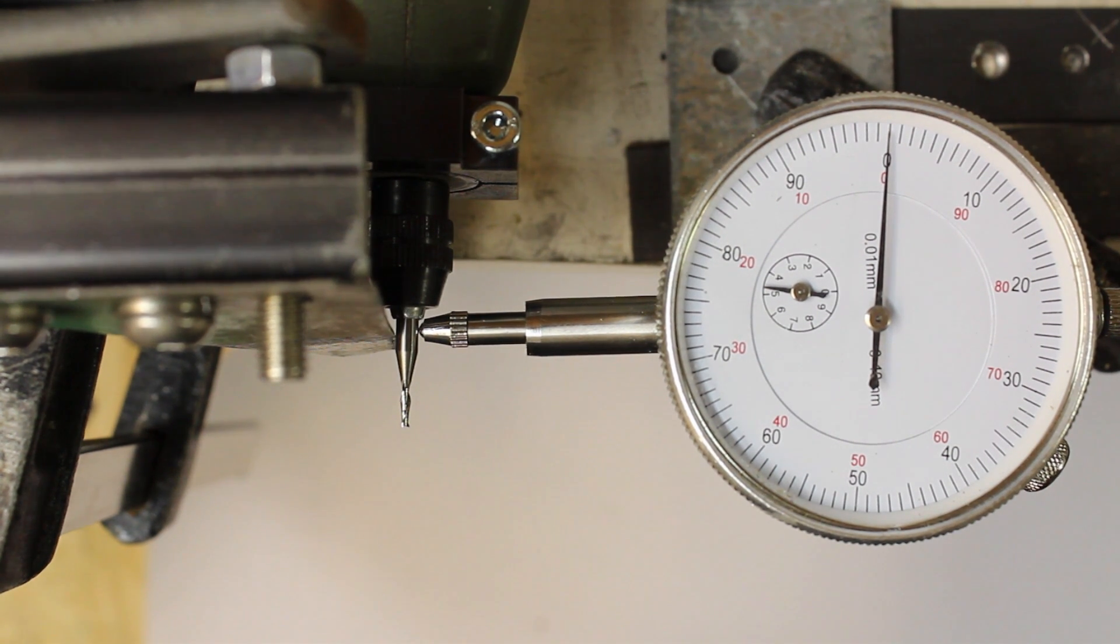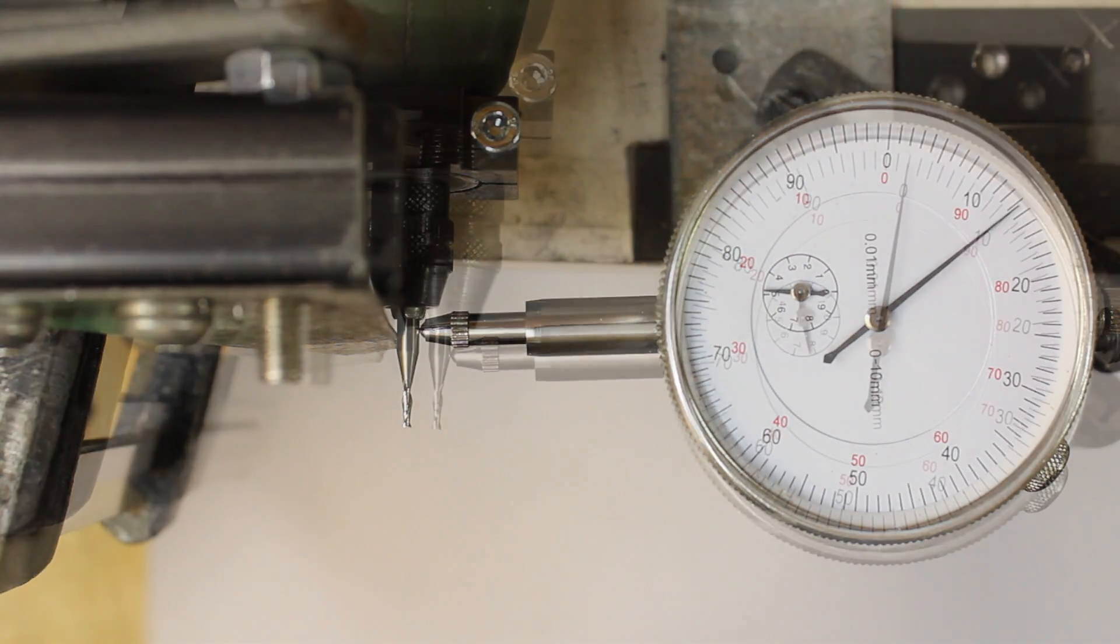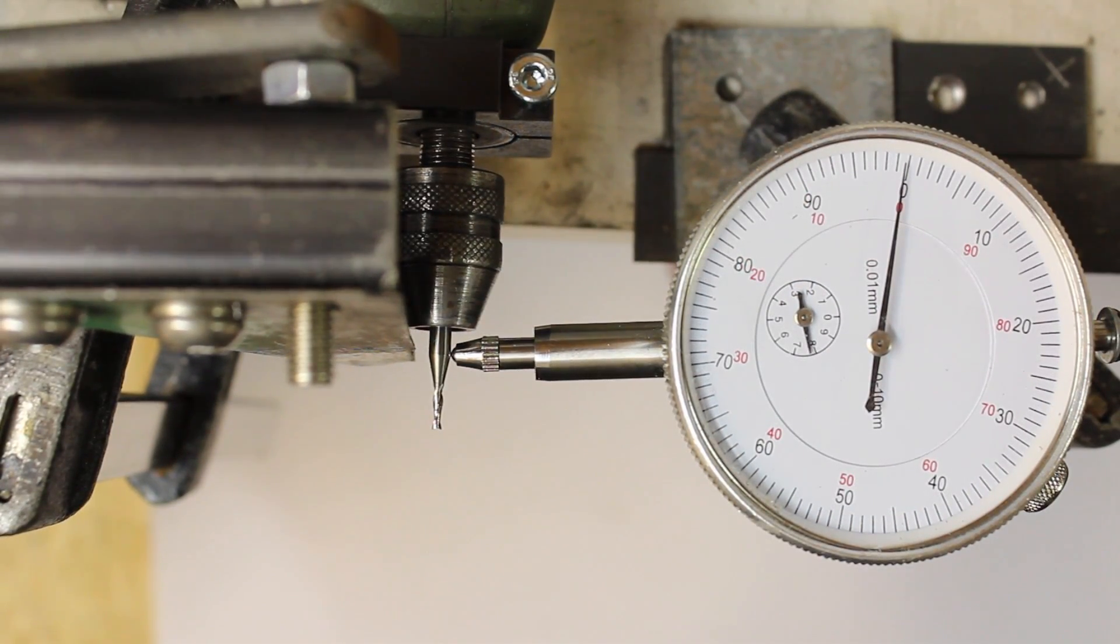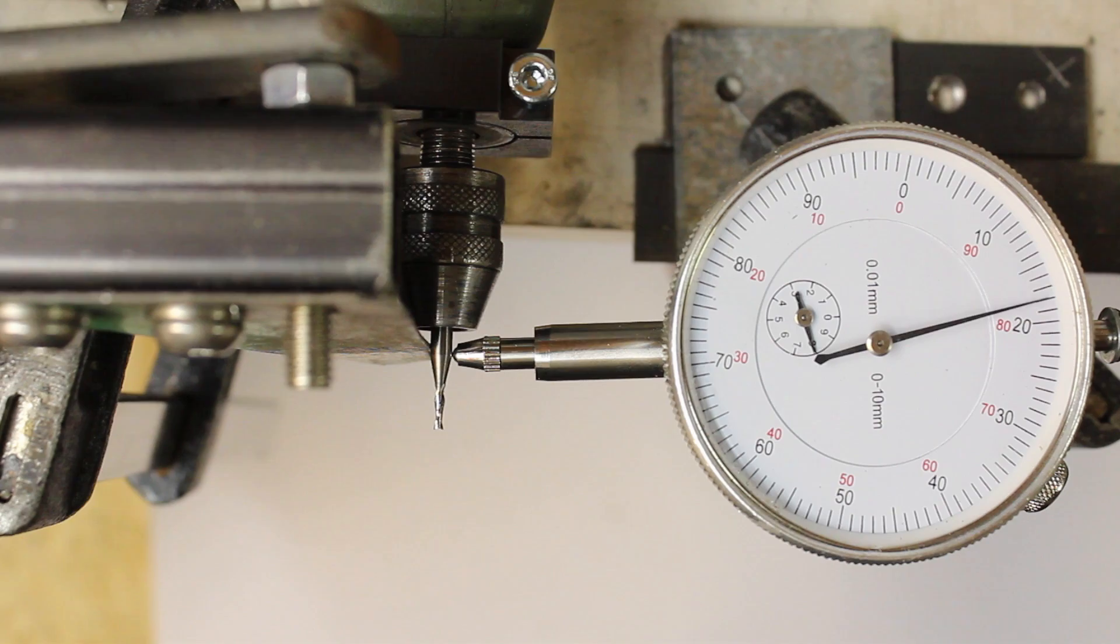We get a deviation of 130 micrometers at the 100W motor when using the collet and almost 200 micrometers with a 3-jaw chuck.